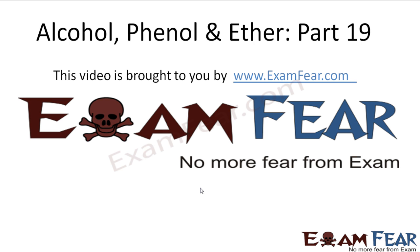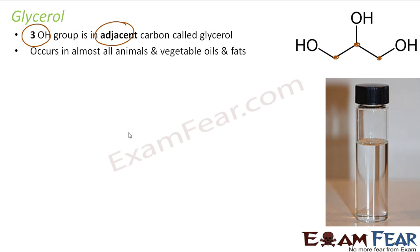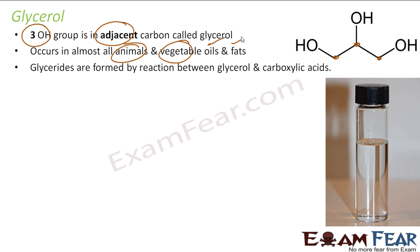Hello friends, this video on alcohol, phenol and ether part 19 is brought to you by examphia.com. Glycerols have three OH groups, and note that they are adjacent — on three adjacent carbons. Glycerols are present in almost all animal and vegetable oils and fats.